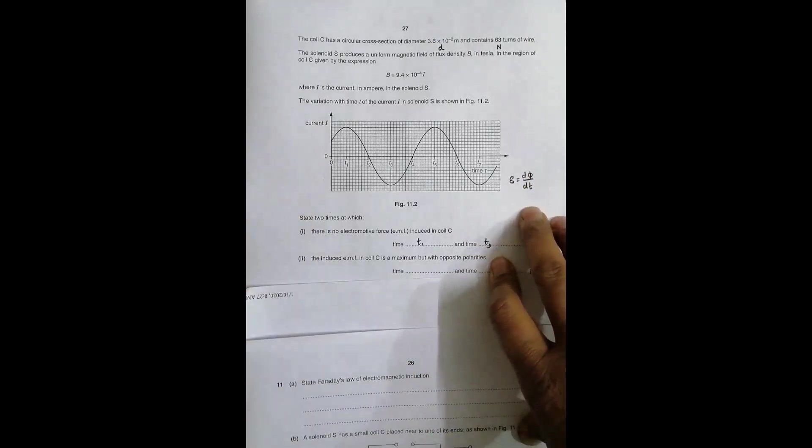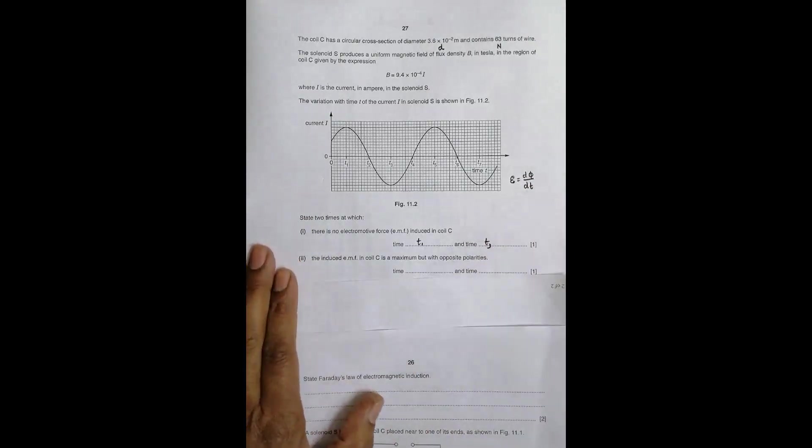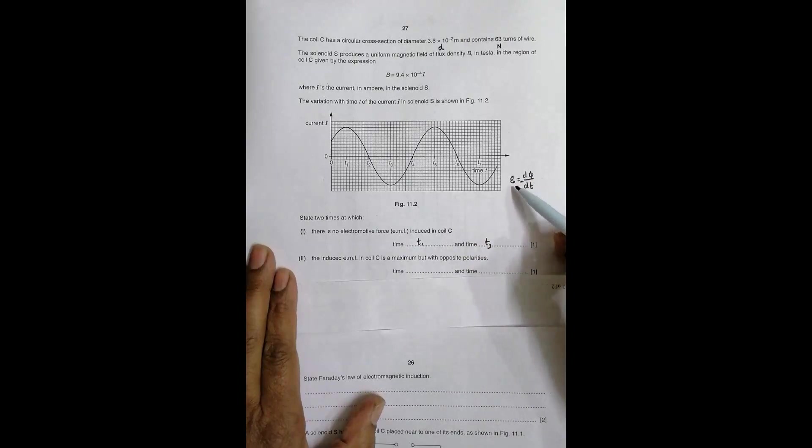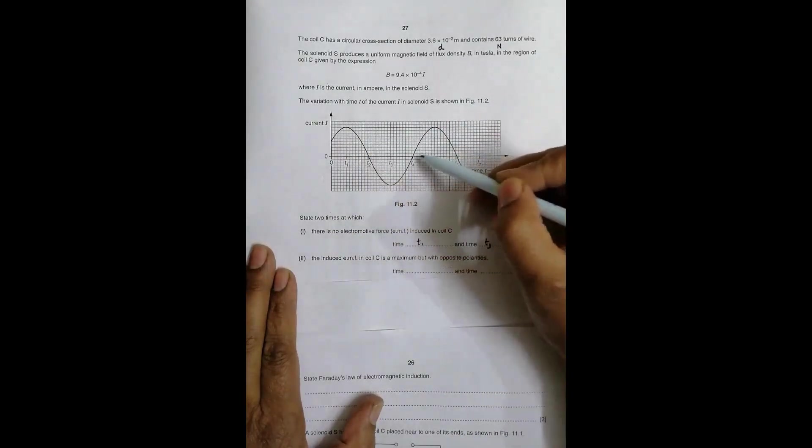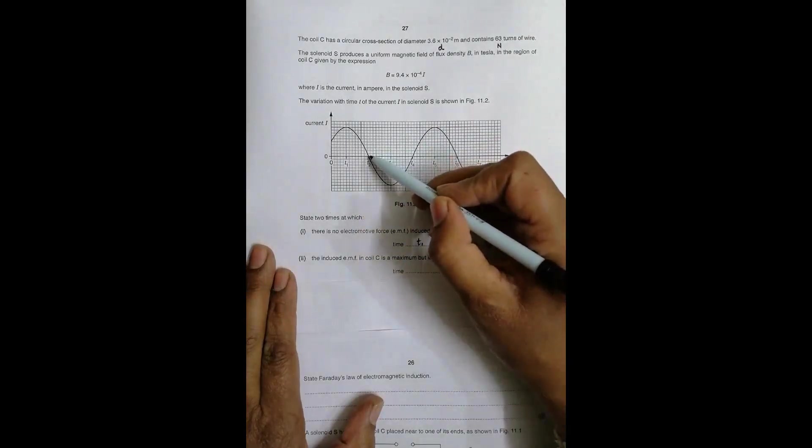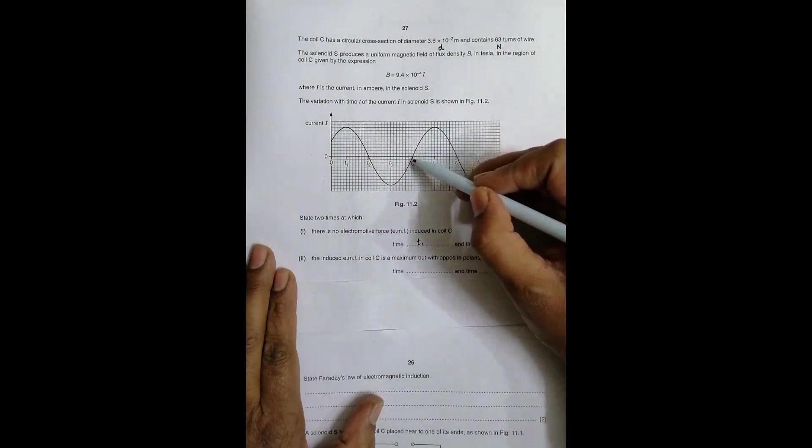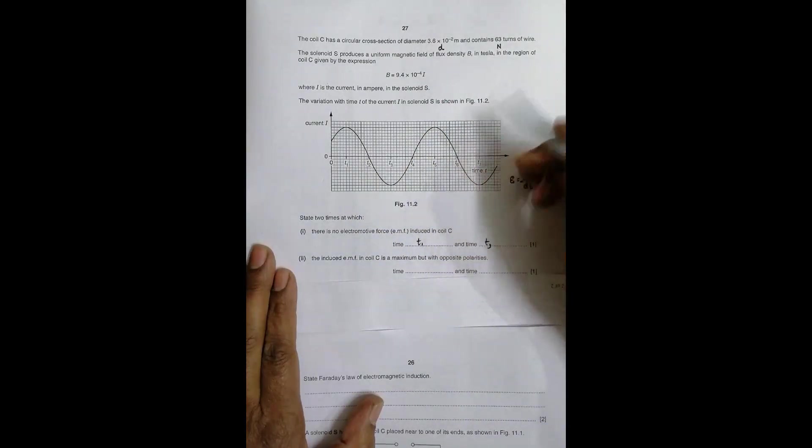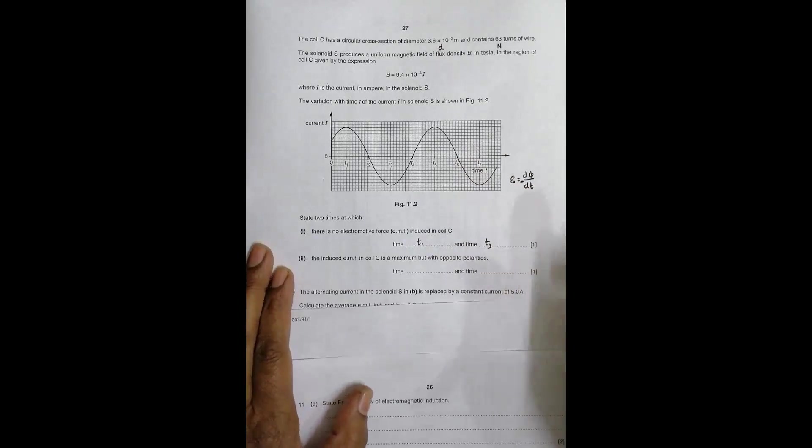The induced EMF in coil C is a maximum but with opposite polarities. The induced EMF is given by this expression including the negative sign. Whenever the variation of φ is high, and variation of φ depends on current. When variation of current and φ is high, the variation is highest here, here, and here. It is high at t₂, t₄, and t₆.